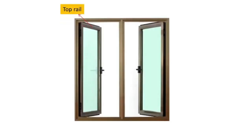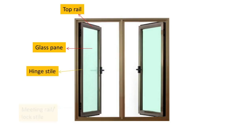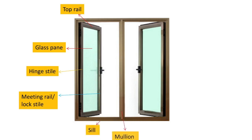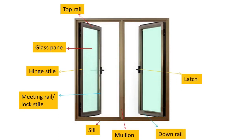Top rail. Glass pane. Hinge style. Meeting rail or lock style. Seal. Mullion. Down rail. Latch. Jam.